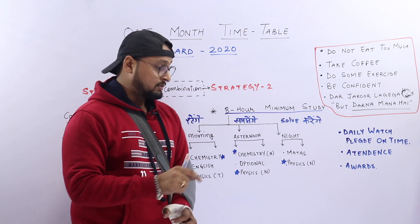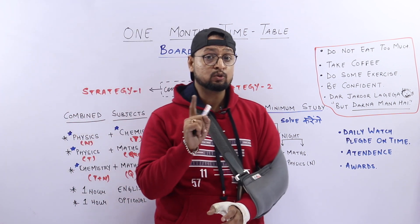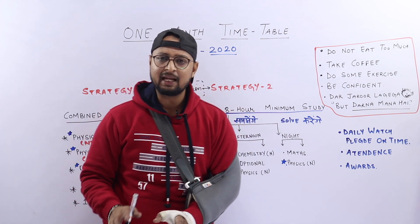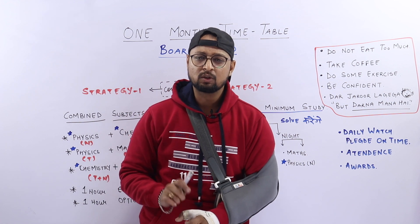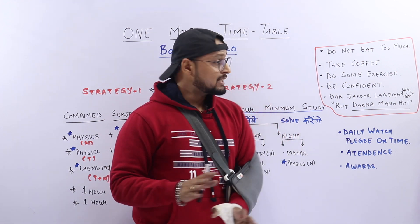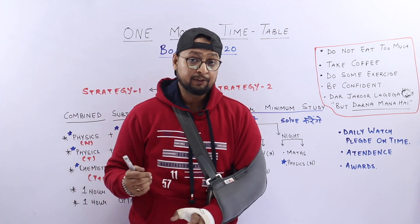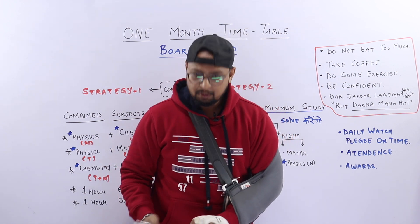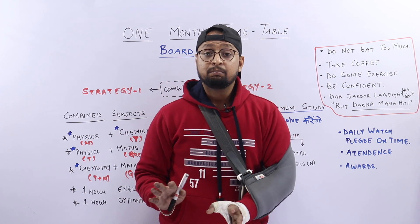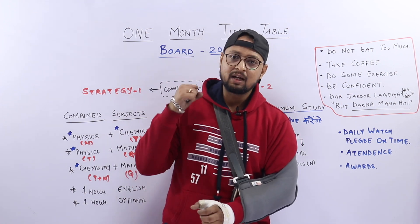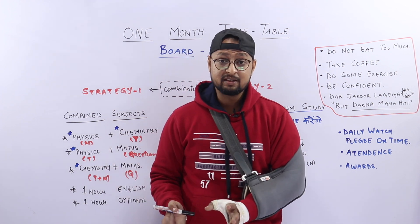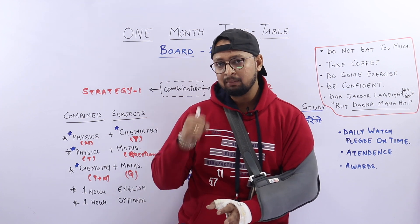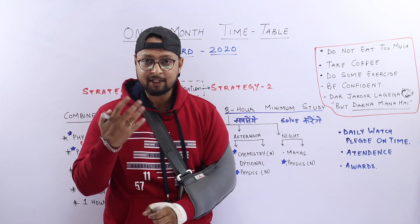Kuch important points dhyan mein rakho. Sabse pehli cheez: do not eat too much. Raat ke time par light food lo. Agar heavy food liya to coffee pi lo, ya walk par jao, ya thodi jump karo — koi bhi exercise zaroor karo. Humare studio mein mini gym bana rakha hai — jab neend aati hai toh dumbbells uthake kaam shuru ho jaata hai. Jab body mein movement aata hai to 101% aankhein khul jaati hain.